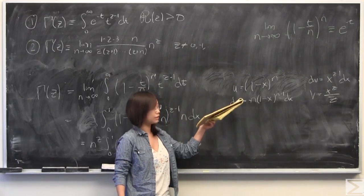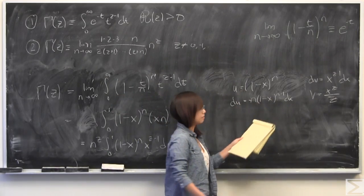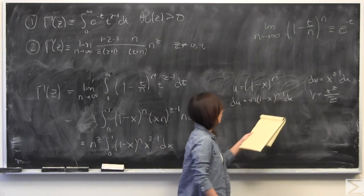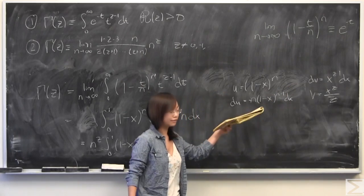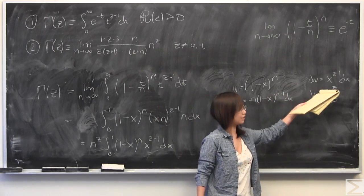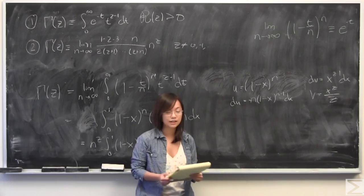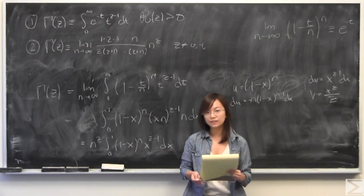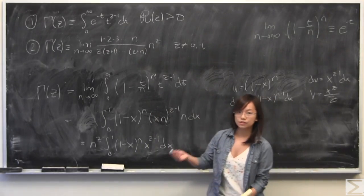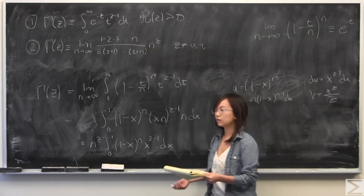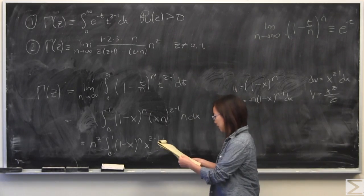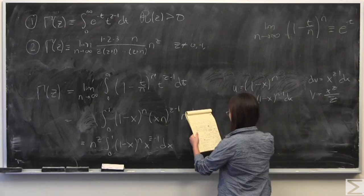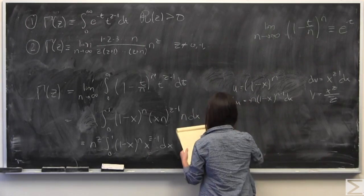Okay, so I've set u equal to 1 minus x to the power of n minus 1. It's the power of n. So I've done du and also dv is equal to x to the power of z minus n. Therefore, this is v. So I'm going to do the integration by parts, just uv minus integral of v du. And we do need to evaluate uv at the boundaries. So I'm just going to write that down.